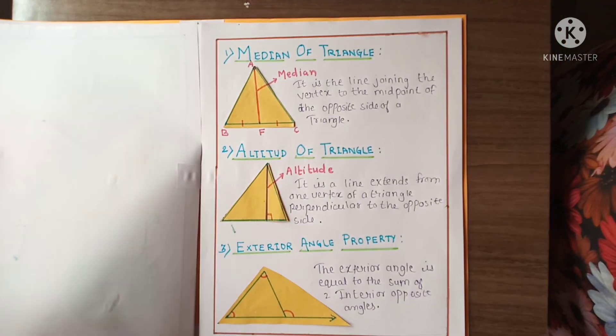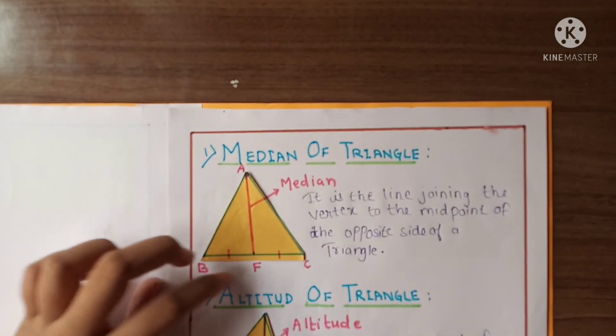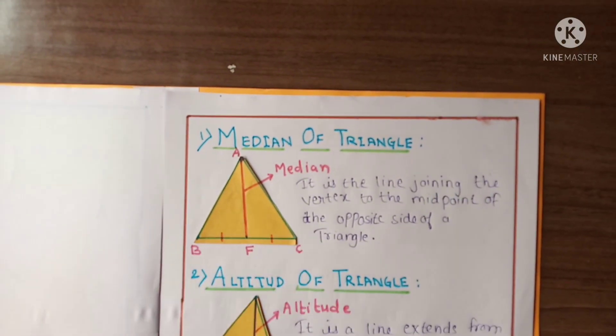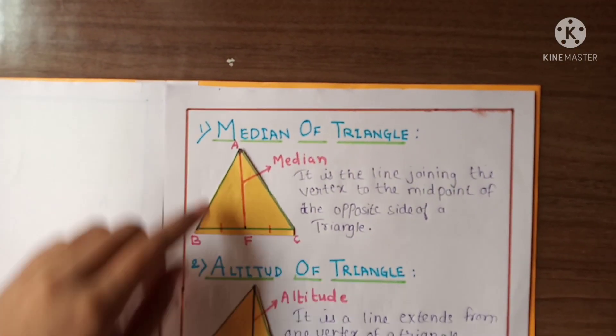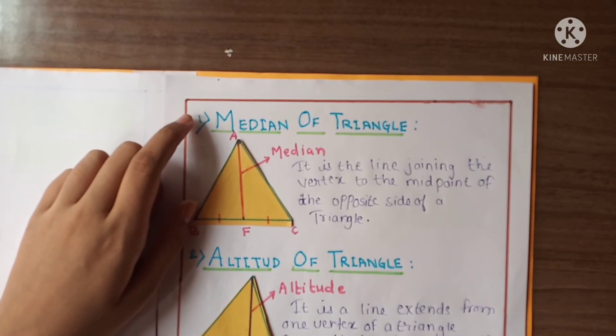Let's see the next. Here number one is median of a triangle. Here is the diagram and here is the definition. It is the line joining the vertex to the midpoint of the opposite side of a triangle.